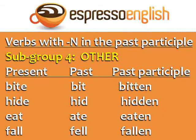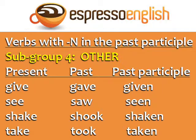Subgroup four — other: these verbs have N in the past participle but don't appear to follow any other pattern. Bite — bit — bitten. Hide — hid — hidden. Eat — ate — eaten. Fall — fell — fallen. Give — gave — given. See — saw — seen. Shake — shook — shaken. Take — took — taken.